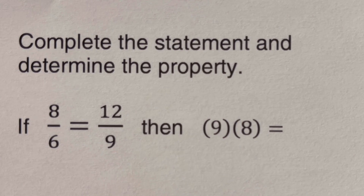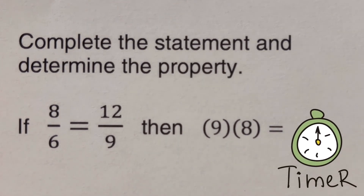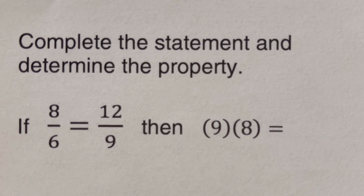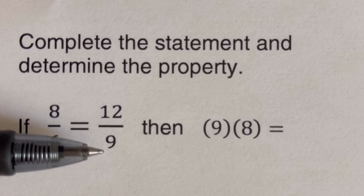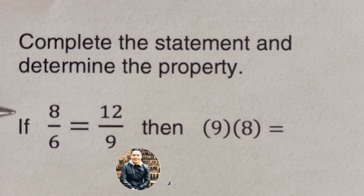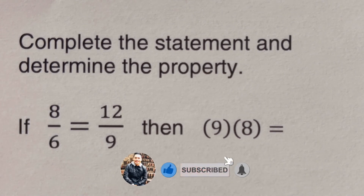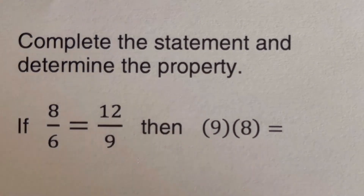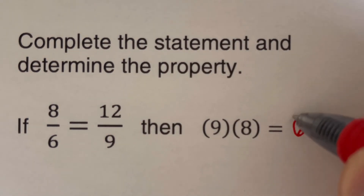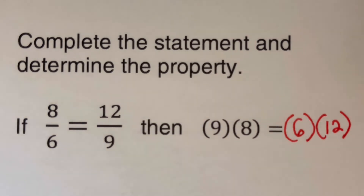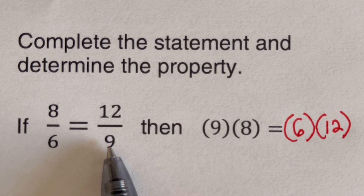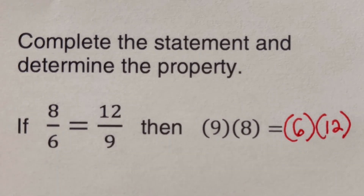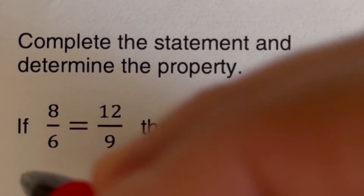At this time, pause the video and try this problem on your own, then check your answer. We are given eight over six equal to 12 over nine, then nine times eight equals blank. We cross multiply: nine times eight equals six times 12. Both the extremes are multiplied together, and the means are multiplied together. This is the cross product property.